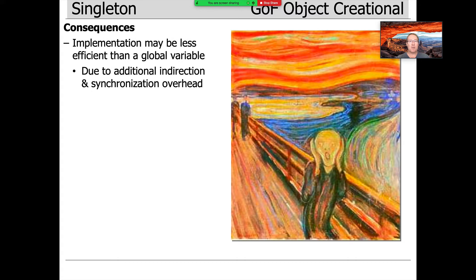If you're accustomed to using global variables as part of your programming style, it may appear at first glance that singleton will have more overhead because of the additional indirection — method calls — and, depending on whether you're in a multi-threaded program, you may have additional synchronization overhead relative to global variables.